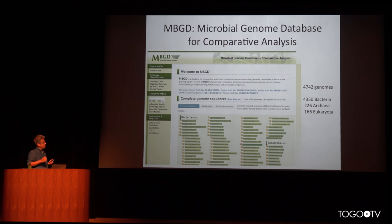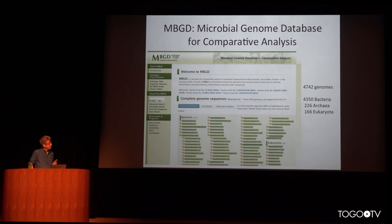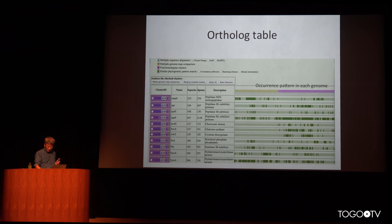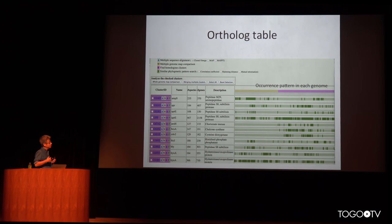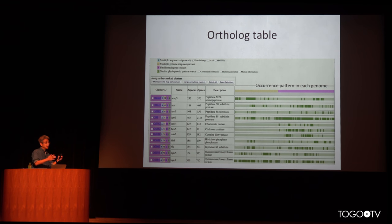This database was established almost 20 years ago, and now contains almost 5,000 genomes, including bacteria, archaea, and unicellular eukaryotes. The main contents of this database is ortholog relationships among the microbes, and the default ortholog table, or standard ortholog table, covers the entire taxonomic range.